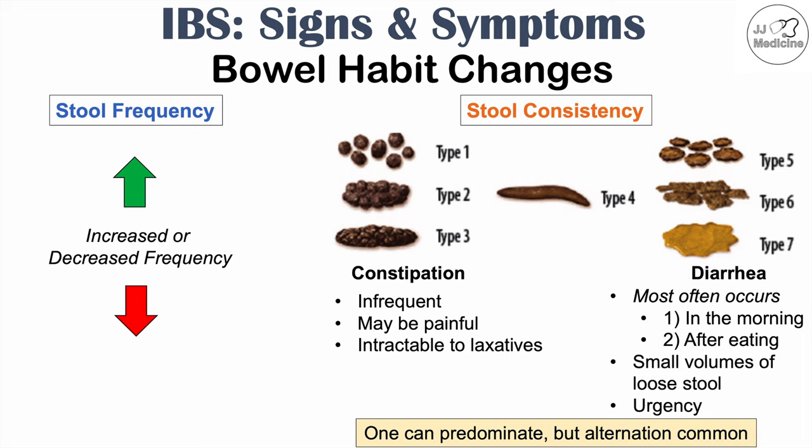One of these patterns can predominate. Patients can have more issues with constipation or more issues with diarrhea, but they can alternate. So individuals can have very changing symptomatology with IBS — sometimes constipation, sometimes diarrhea, or they can have predominantly one or the other.